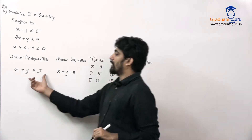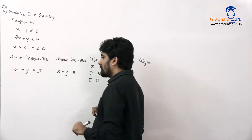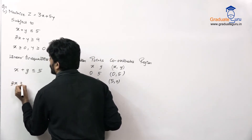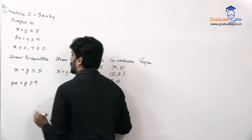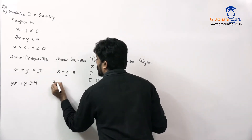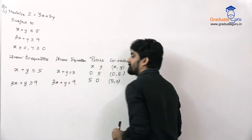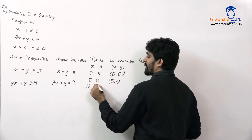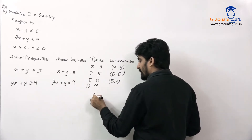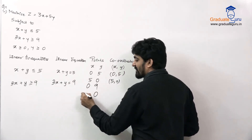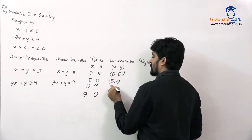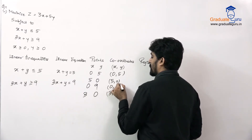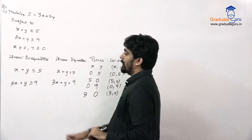That's the first condition done. Then we have 3x plus y greater than or equal to 9, which gives the equation 3x plus y is equal to 9. Substituting x = 0 gives y = 9, so the point is (0, 9). Substituting y = 0 gives x = 3, so the point is (3, 0).